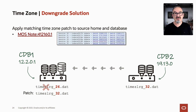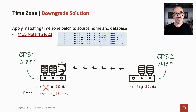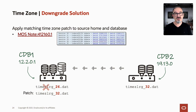You go to this MOS note — it's a very long MOS note and you have to scroll down for several minutes until you get to section H. In that section, you'll find the links to the time zone patches. Then you download the matching time zone patch and apply it to your home.